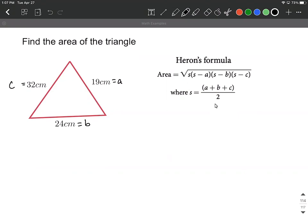So the semi-perimeter s is going to be calculated by doing a plus b plus c all divided by 2. So adding the numerators together, we get 75 divided by 2, which in my situation works out to be 37.5.